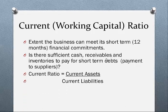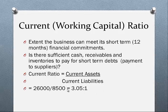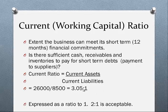The current ratio is calculated by dividing current assets by current liabilities. Here's a quick example: 26,000 is the current assets divided by 8,500, and we have a ratio in this instance of 3.05 to 1. It's expressed as a ratio to 1.